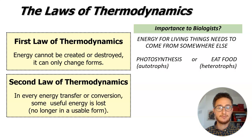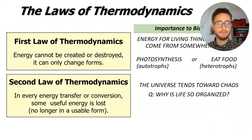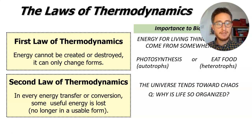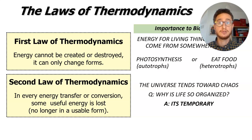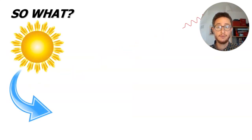But the second law of thermodynamics makes this problematic for life, because every time you transfer energy from one form or one material into another, you're going to lose some to the environment. The universe tends toward what we call chaos — things get more and more disorganized over time. That begs the question of why we as living things are so incredibly organized. The basic answer is: it's temporary. The organization of all the atoms and molecules in your body is a very temporary state of that matter, and you need a constant source of incoming energy just to stay alive.